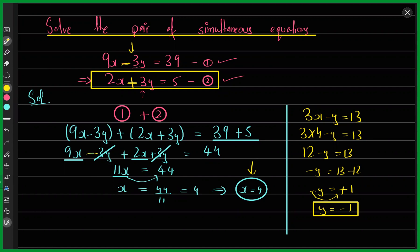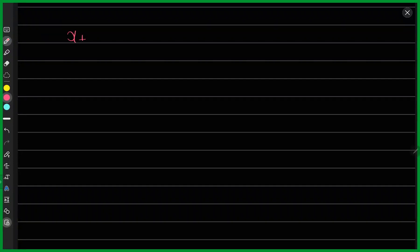You have a good variety of ways to deal with the equations. Let me talk about another question quickly so we get good at simultaneous equations, and then I'll send you homework questions to do by the end of today. Another question says: x plus y equals 4 and 3x minus 2y equals 7.